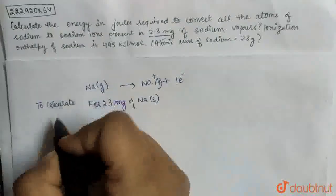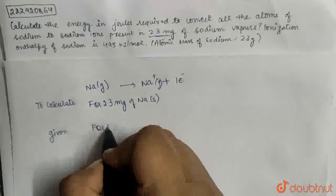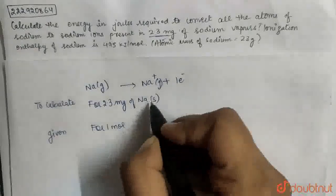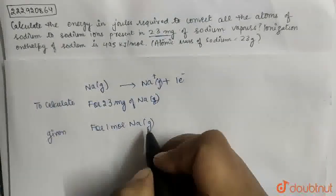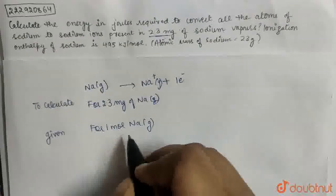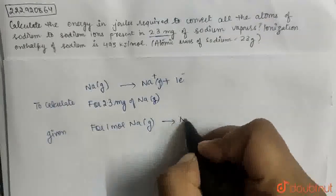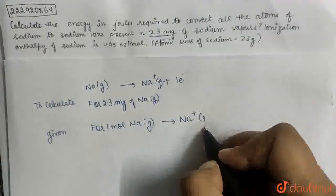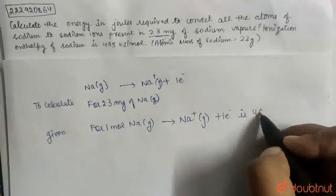Okay, given that for one mole, for 1 mole of sodium vapors, energy required for 1 mole of Na vapors to convert to Na positive ions plus 1 electron is 495 kJ.